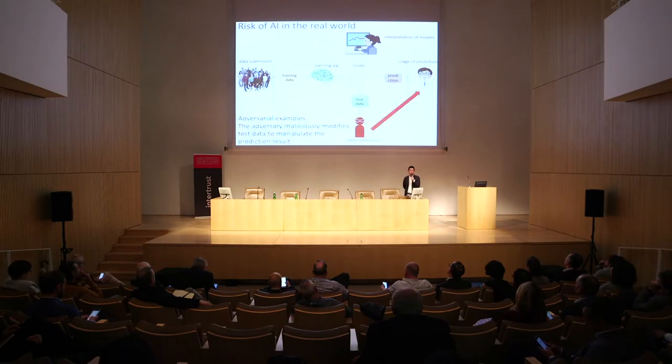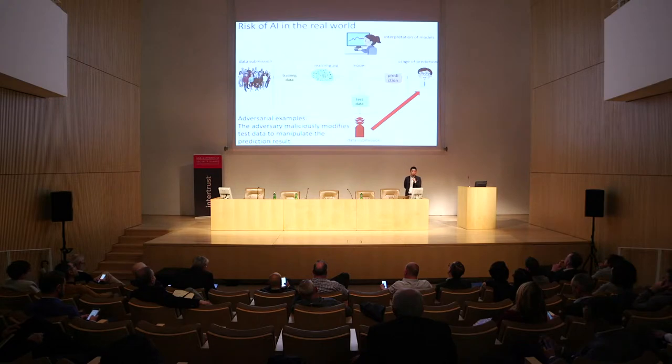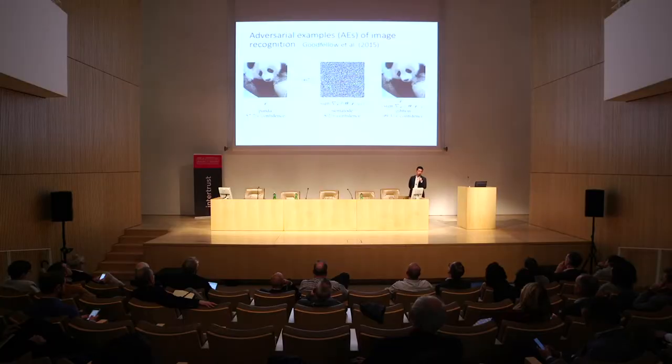One famous example of an attack against artificial intelligence is called the Adversarial Example. In this attack, the adversary maliciously tries to modify test data so that the prediction result is controlled as desired. The leftmost figure looks like a panda to humans and is also recognized as a panda by the machine learning model. The center figure is an adversarial perturbation crafted so that the resulting example is recognized as a different animal by the machine learning model.